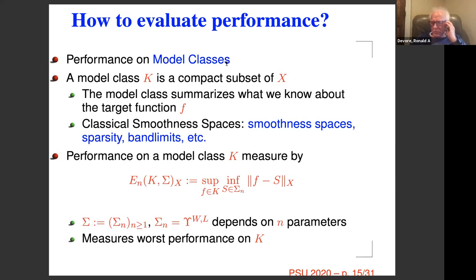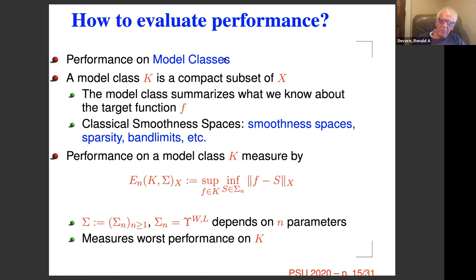If somebody came into your office and you had to convince them that neural nets are great from an approximation viewpoint, how would you do that? What we usually do is evaluate a method on model classes. If you tell me nothing about F, I can't tell you anything about how well it's approximated. To get information, I need properties of F. We create model classes that put all known properties of F together into a class K.